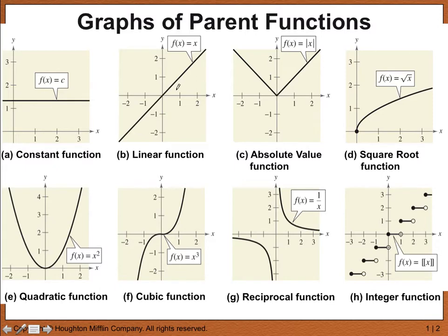f of x equals x is just a diagonal line with slope 1 and y-intercept 0. All linear functions — all lines that we've seen — are really just variations, or children, of the parent linear function. The parent linear function is f of x equals x.